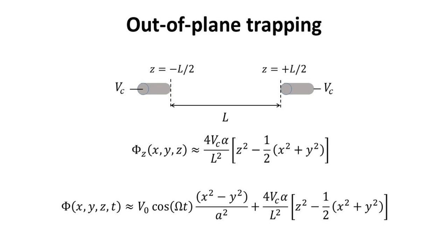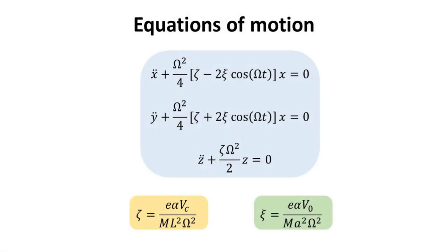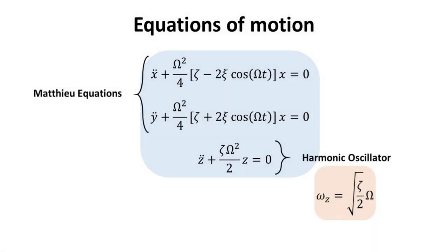Summing this potential with the moving saddle that we computed, we have the total potential that traps the point charges. We can use this potential to find the equations of motion in the X, Y and Z directions as follows. Here, we introduce the parameters zeta and psi for simplifying the notations. Again, the equations in X and Y are the Mathieu equations. And, in the Z direction, we have a harmonic oscillator with frequency omega Z.